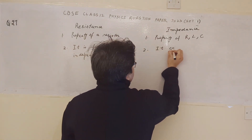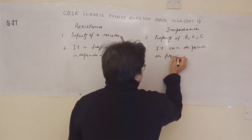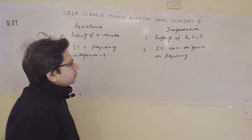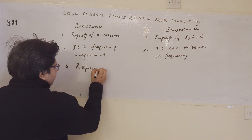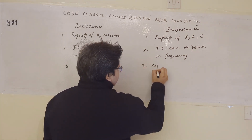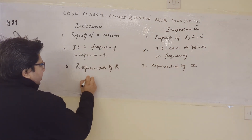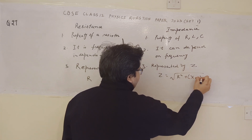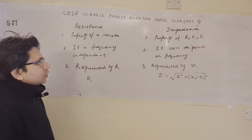Impedance, on the other hand, can depend on the frequency of the applied source. Resistance is represented by the alphabet R, whereas impedance is represented by Z. The expression for resistance is R itself, and the expression for impedance is Z equals to square root of R squared plus (X_L minus X_C) whole squared. These are the key points comparing resistance and impedance.